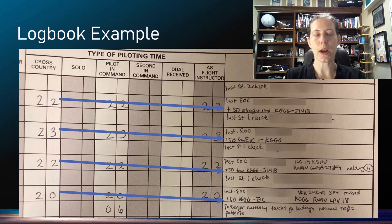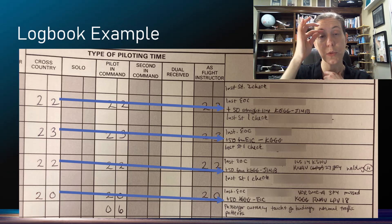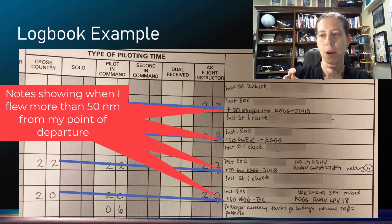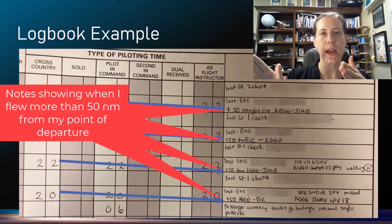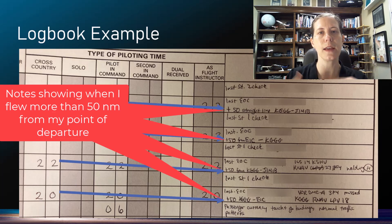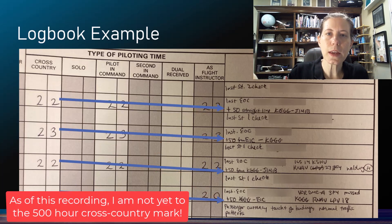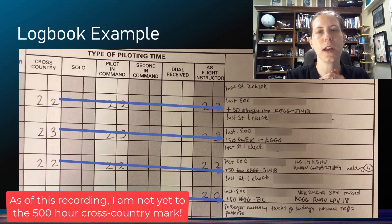Here's an example of what I do in my personal logbook. I've blurred out everybody's names, but I have written in the remarks '+50 straight line' whenever I went more than 50 miles away. I've gotten familiar with my local area so I know which approaches at which airports I can fly to get more than 50 miles, so I can log that as cross-country time.